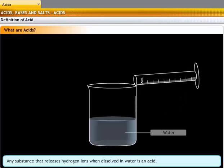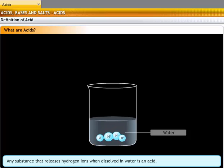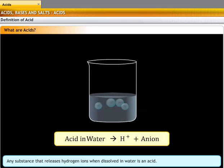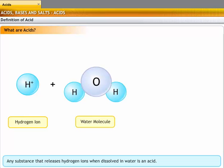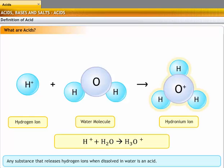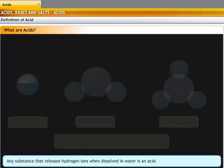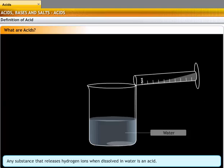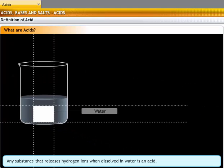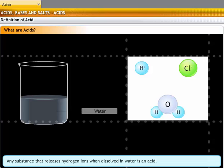Any substance that releases hydrogen ions when dissolved in water is an acid. A hydrogen ion cannot exist on its own, so it combines with a water molecule to form a hydronium ion. For example, hydrochloric acid when dissolved in water liberates a hydrogen ion and a chloride ion. The hydrogen ion combines with water to form a hydronium ion.